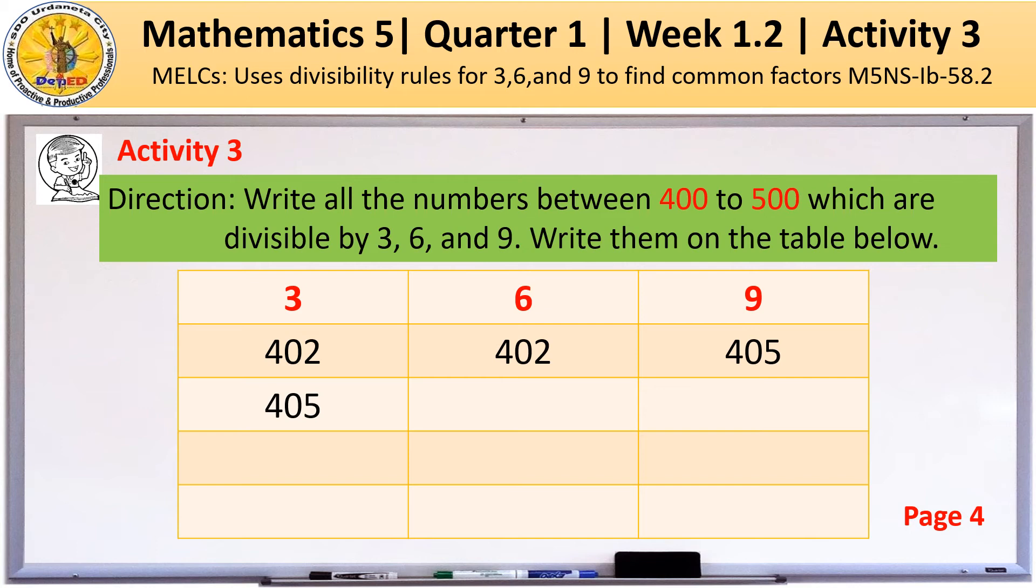Divisible by 3, we have 402 and 405. Divisible by 6, we have 402. Divisible by 9, we have 405. Take note guys, numbers between 400 to 500 which are divisible by 3, 6, and 9.